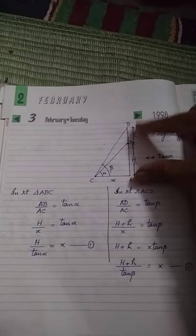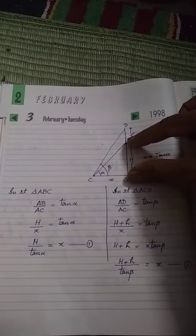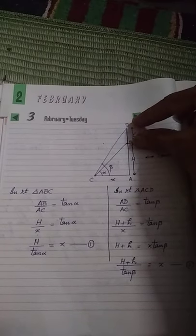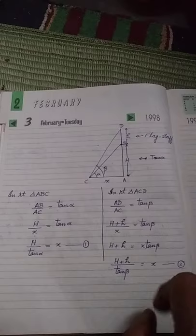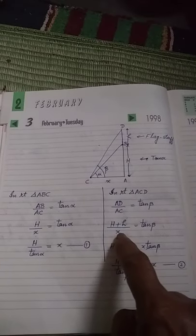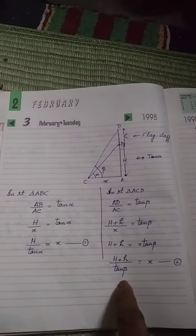Now AD will be this capital H plus this small h, and AC is x. You interchange their places. X will go there and tan beta will come in the denominator. That is equation number 2.